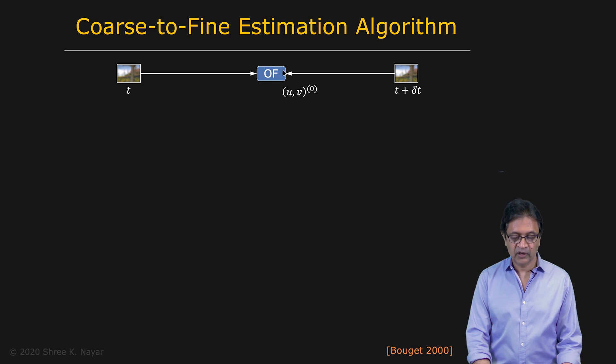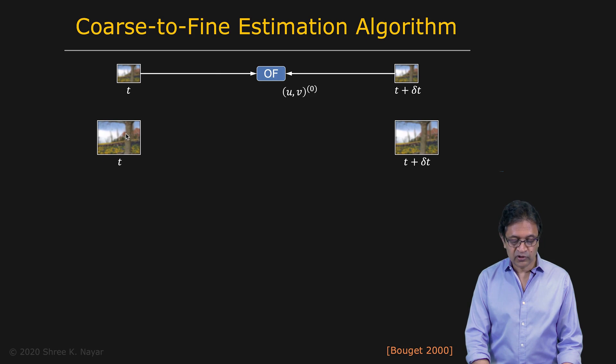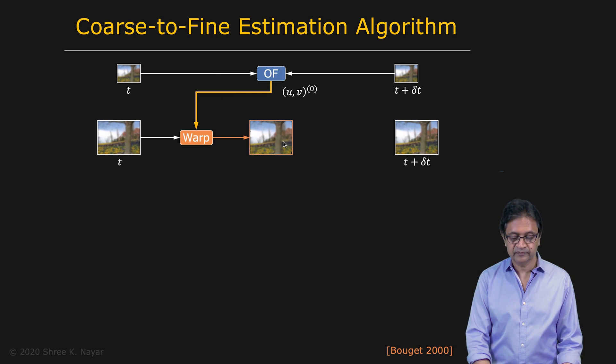We are now going to use this optical flow to warp the image in the next resolution, next higher resolution. So we can essentially take this optical flow and push the pixels around in this image to compute a new image, which is a warped version of it.